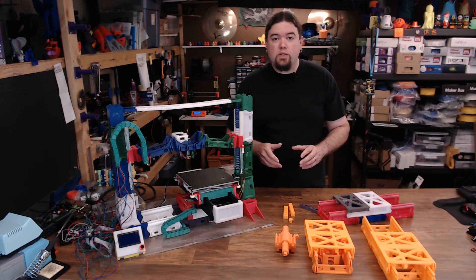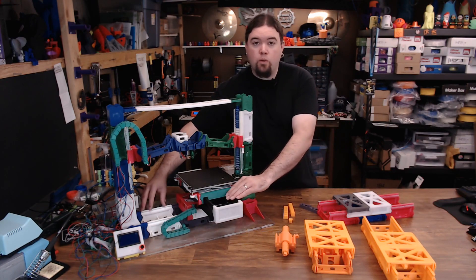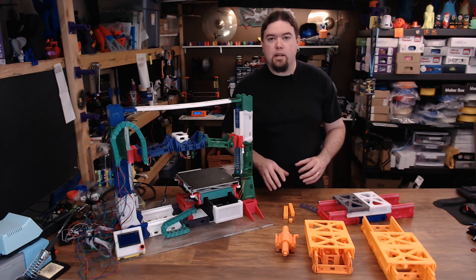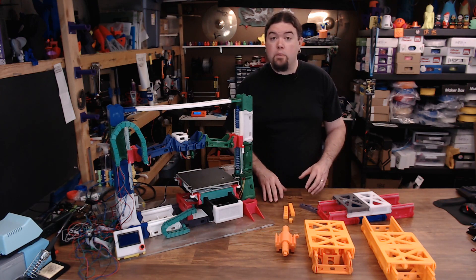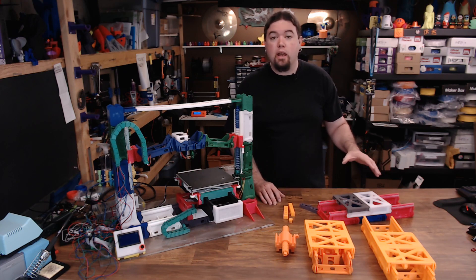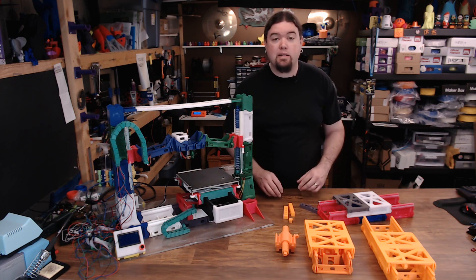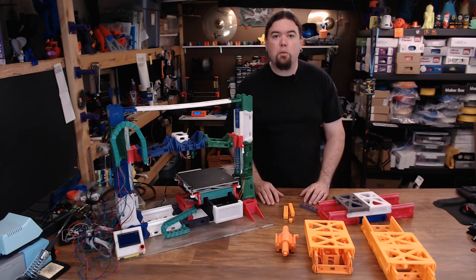So after I got the slop values figured out, I reprinted the X and Y rails in PLA. And that really seemed to help with the quality issues that I was seeing. It's still not great, but it's way better than it was originally. And I think it is possible to reproduce a Snappy on a Snappy. But that's ultimately what we're going to find out.